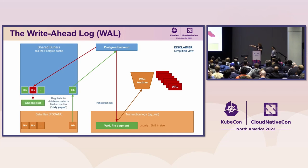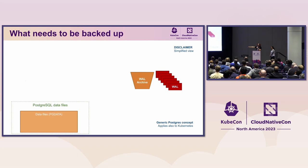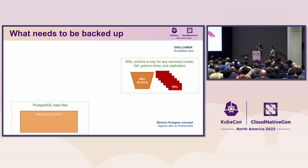Postgres works on the assumption that shared buffers and data files might differ at any time. It's the checkpoint process that ensures that dirty pages are regularly flushed to disk. To ensure smooth disaster recovery, we need to focus on safeguarding PG database backups and the WAL archive. These resources are essential for point-in-time recovery and serve as the bedrock for Postgres replication.